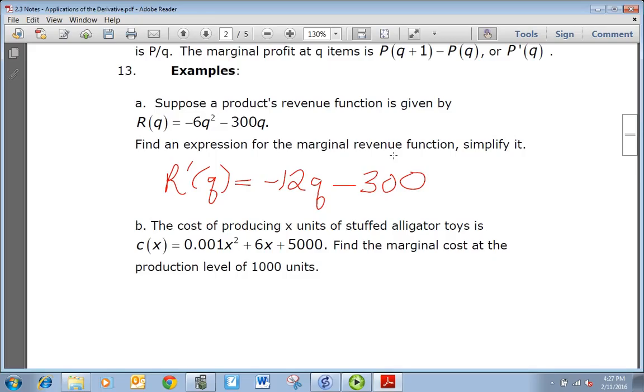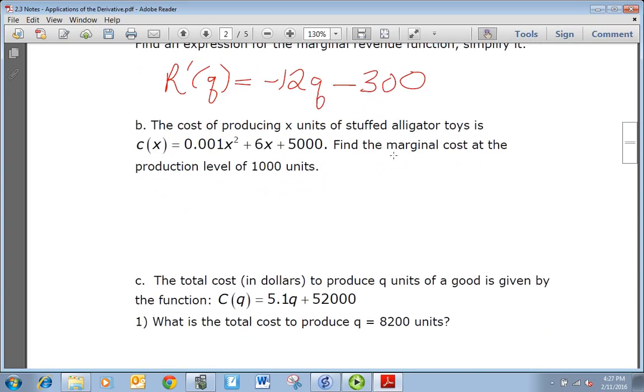Part b: The cost of producing x units of stuffed alligator toys is C(x) = 0.001x² + 6x + 5000. Find the marginal cost at the production level of 1000 units. So again we want to start by finding C'(x), which is going to be 0.002x + 6. And at 1000 units, we just need to plug 1000 in for x.